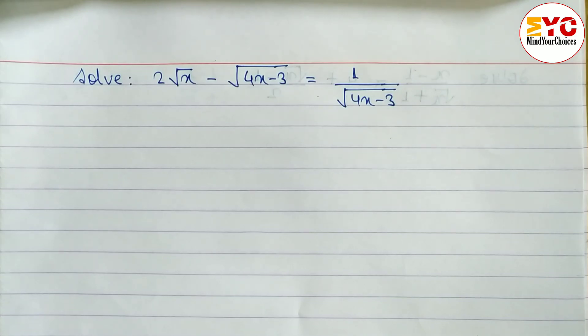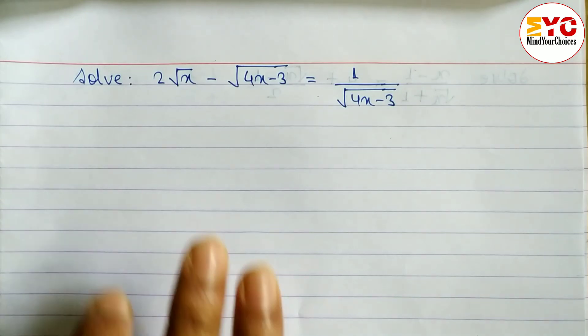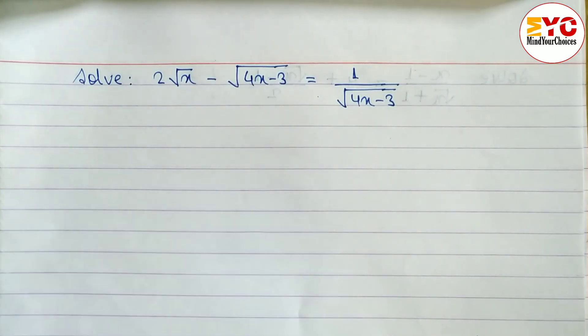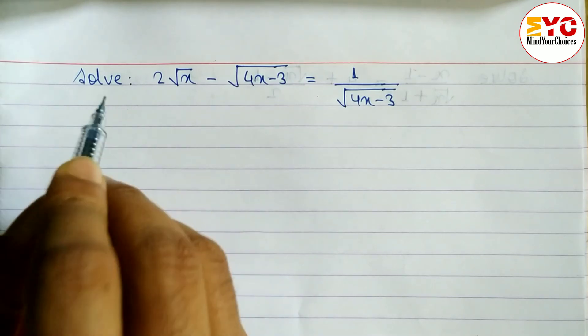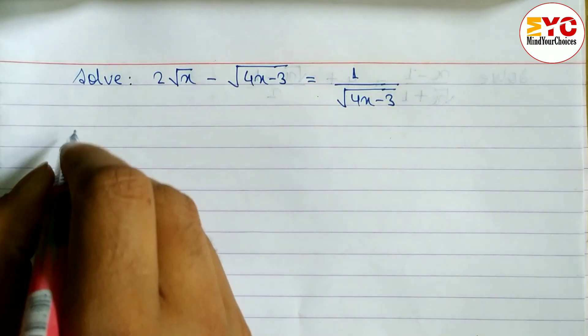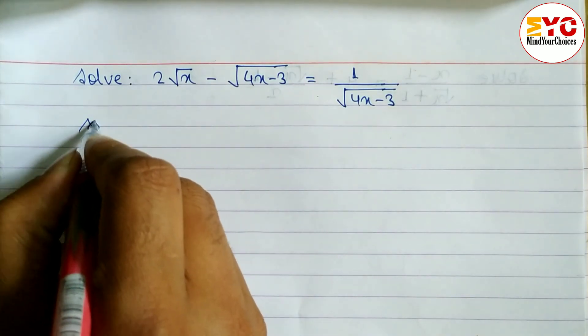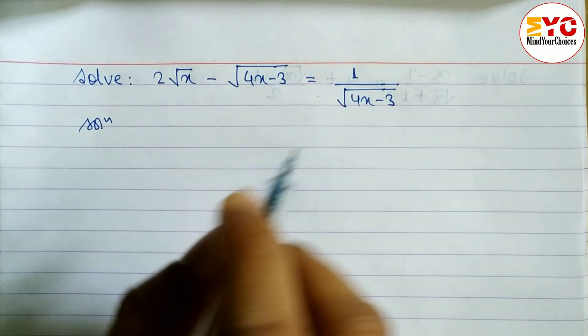This question is taken from radical insights and is maximum times repeated in SE2. Let's take a start. We have to solve — meaning we have to find out the value of x. So first of all, here is what we have to do.